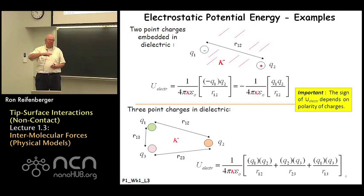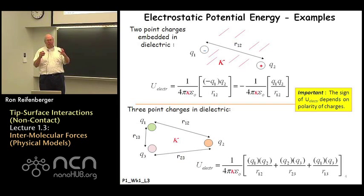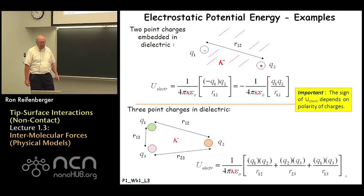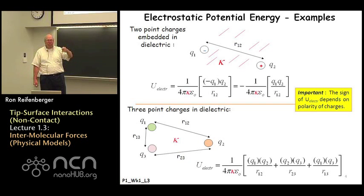The nice thing about electrostatic potential energies is that they're additive. So if you have a system of charges — let's say q1, q2, and q3 — that are placed inside of a dielectric medium with dielectric constant kappa, then the net interaction potential energy of those three charges can be found by summing up piecewise the interaction potential energy of each charge with its neighbors. I write the particular formula at the bottom of the slide. The potential energy of interaction is lowered by the dielectric constant kappa.